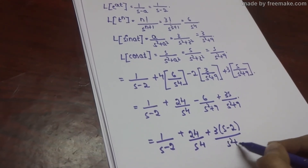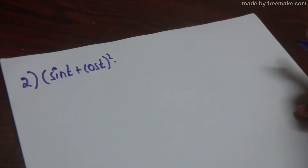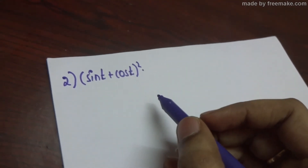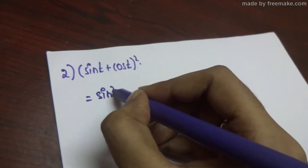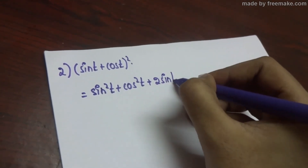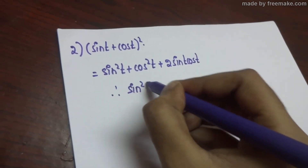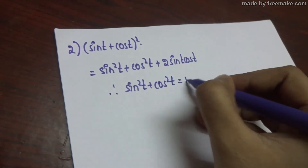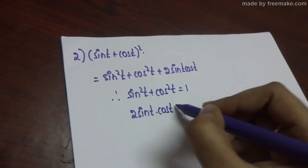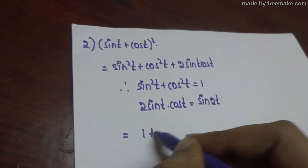This is the second problem on the linearity property of Laplace transform. The expression is in the form of a plus b whole square. Expanding it gives sin square t plus cos square t plus 2 sin t cos t. We know that sin square t plus cos square t equals 1, and 2 sin t cos t equals sin 2t. So the expression simplifies to 1 plus sin 2t.